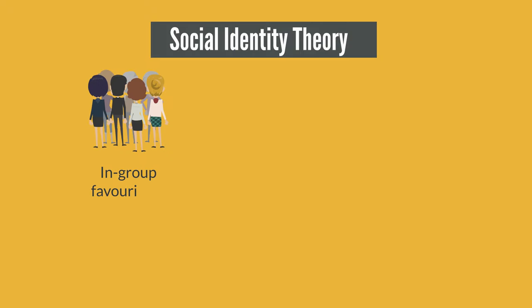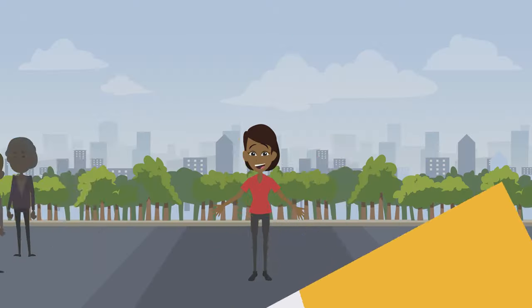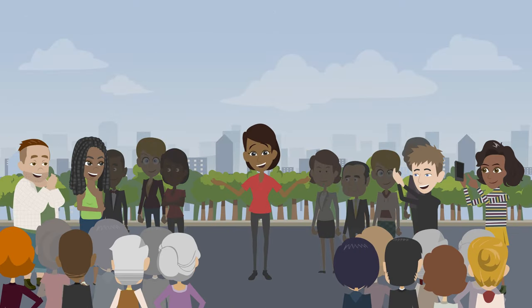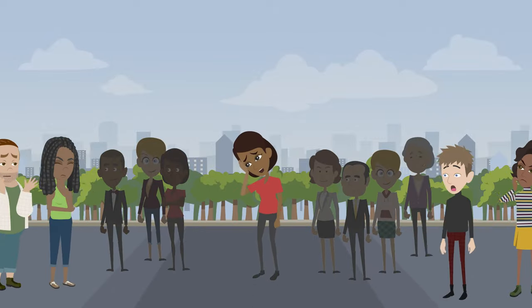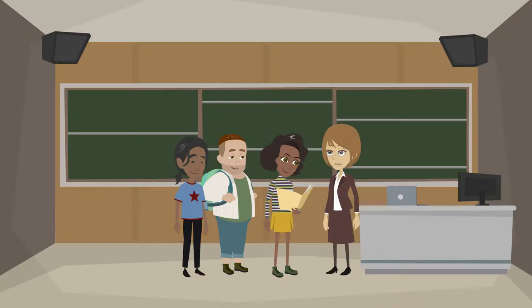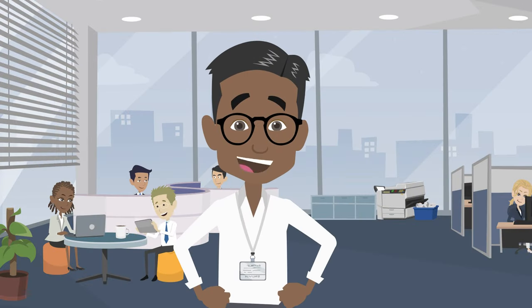One of the central concepts in Social Identity Theory is in-group favouritism and out-group discrimination. People tend to favour individuals who are part of their own group, the in-group, and discriminate against those who are not, the out-group. This bias often occurs even when group assignments are arbitrary, as shown in Tajfel's minimal group experiments.